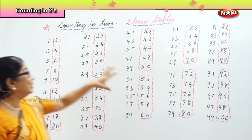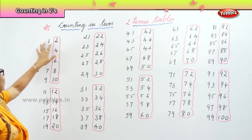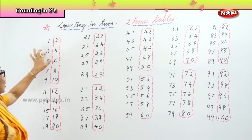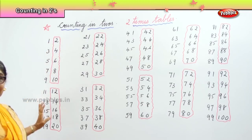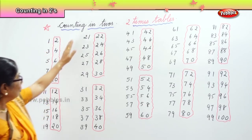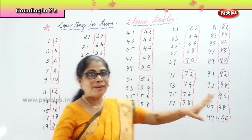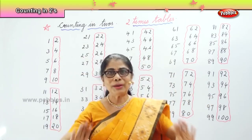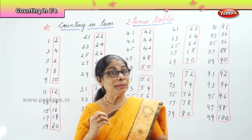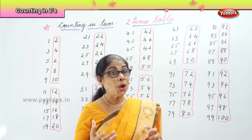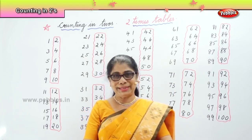We call it skip counting — 1, 2, 3, 4, 5, 6. Forget about the odd ones. You see all the odd ones are on one side, and all what is boxed are the twos. So we learn to do the magic way of building the two times table.